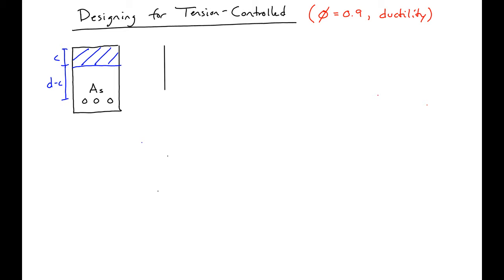We'll have our strain diagram about the neutral axis, with zero strain at the neutral axis, 0.003 strain at the top, and steel strain at the bottom. If we want to design our section to be tension controlled, then we need our steel strain to be greater than 0.005.